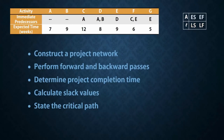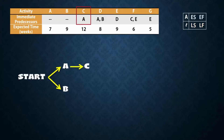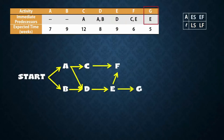I usually like to start with a sketch to make it easier when drawing the full network. Activities A and B have no predecessors so they can begin at start. Activity C needs A to be completed before it can start. D needs both A and B completed. E needs D, F needs C and E, and G depends on E. Since F and G have no successors, they go to finish.